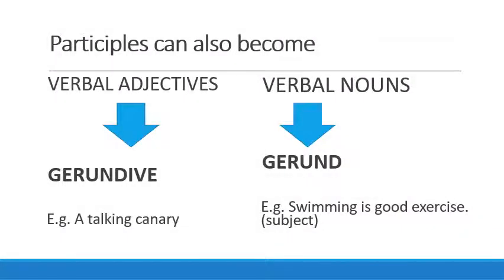Sometimes participles can behave a little bit differently than anticipated. We need to ask ourselves: what is the function of that particular word in that sentence? For example, if we say 'a talking canary,' the word 'talking' is not actually being performed as an action. It would be a verb if we said 'the canary is talking,' but in this case it's actually describing what kind of canary it is, so this is acting as an adjective. We have a special name for this: it's called a gerundive. We can also talk about activities that end in ING which are present participles. 'Swimming is a good exercise' — in this case, is someone actually swimming? No. We're talking about the activity of swimming, and therefore this is a noun. We call this a gerund. If you learn the word gerund, you will remember gerundive, because gerundive sounds like adjective on the end.